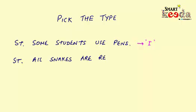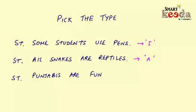Now let's have the next statement: 'All snakes are reptiles.' What's your pick here? You can see that the sentence is starting with the word 'all' and has no negative inferences in it, so the statement will be a universal affirmative statement — that's called an A type statement.